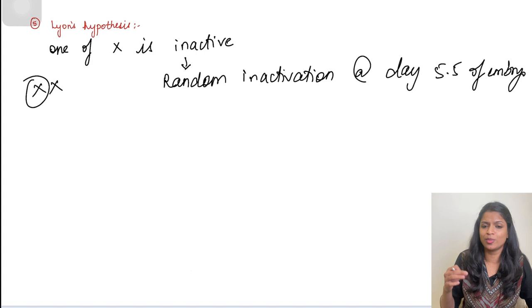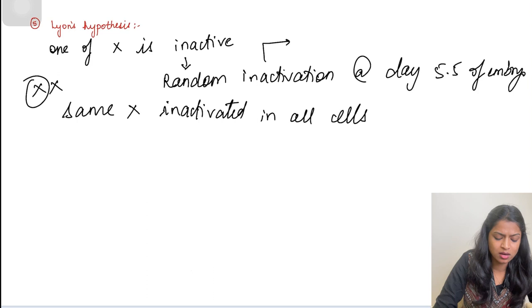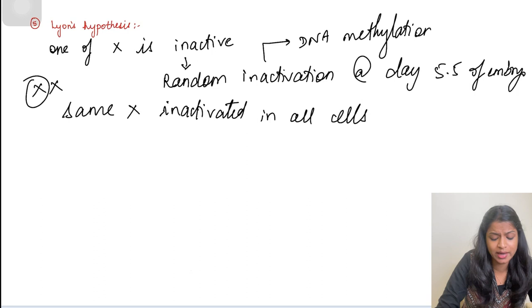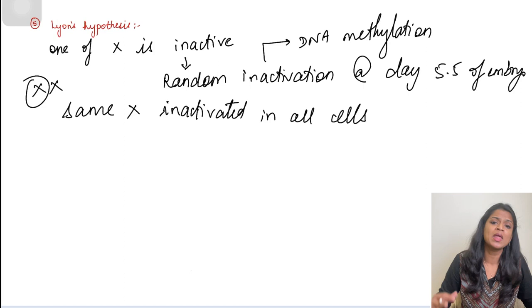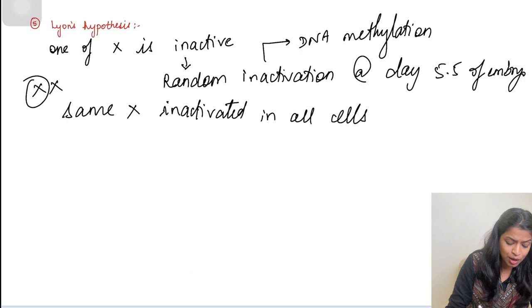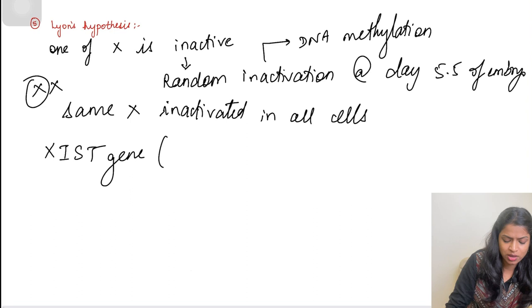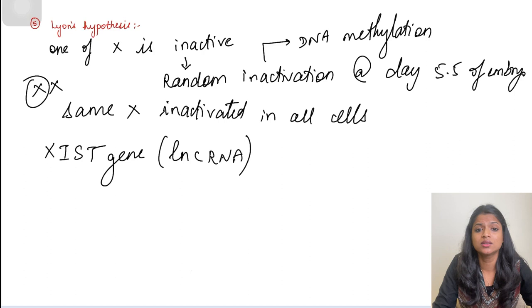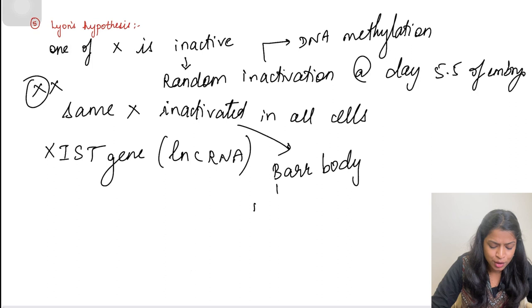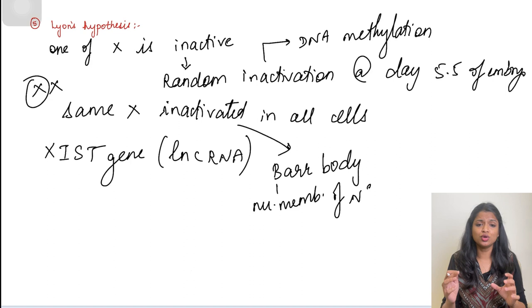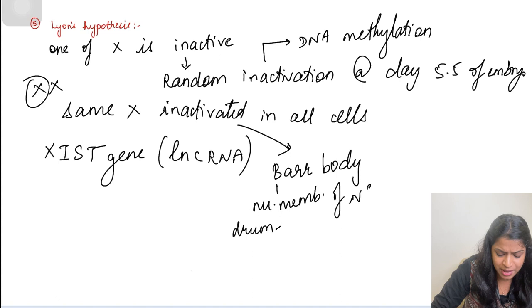This inactivation takes place by DNA methylation, which is an epigenetic change involved in silencing gene expression. The inactivation of the X is controlled by a gene called the XIST gene, which codes for a long non-coding RNA. If you see this inactivated X under the microscope, it appears as a Barr body — visible in the nuclear membrane of a neutrophil as a drumstick-like appearance.